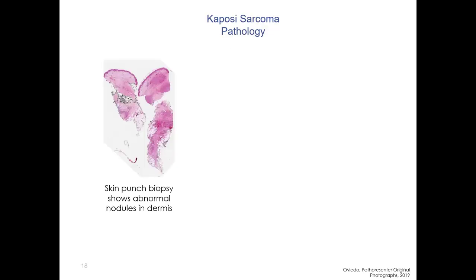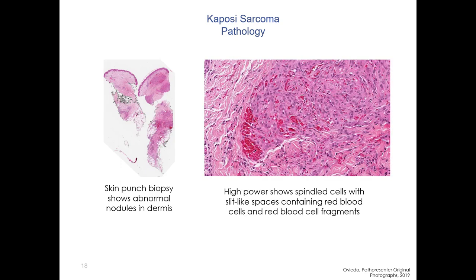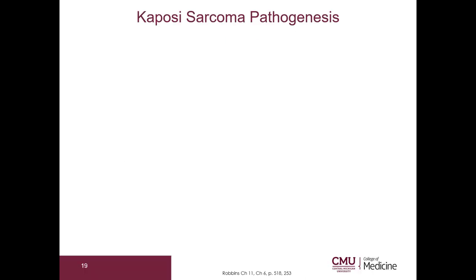Let's look at the pathology. Here is the punch biopsy with numerous abnormal nodules in the dermis. On high power, you can see that Kaposi's sarcoma is a spindle cell proliferation. There are also slit-like spaces that have red blood cells and red blood cell fragments. Let's look at the pathogenesis in more detail.